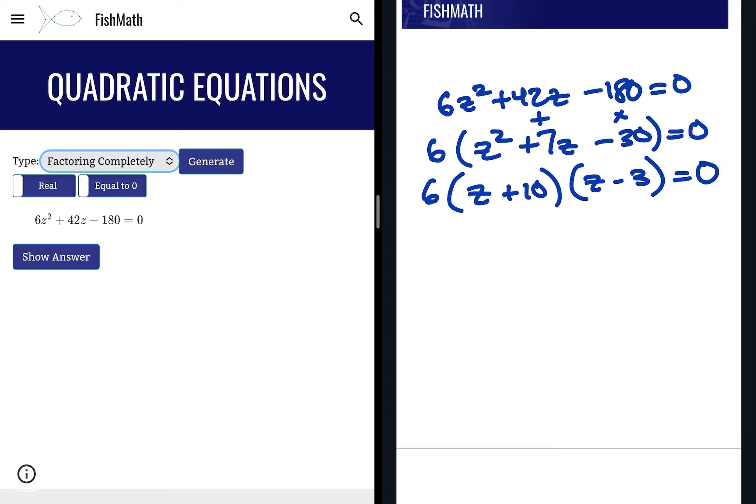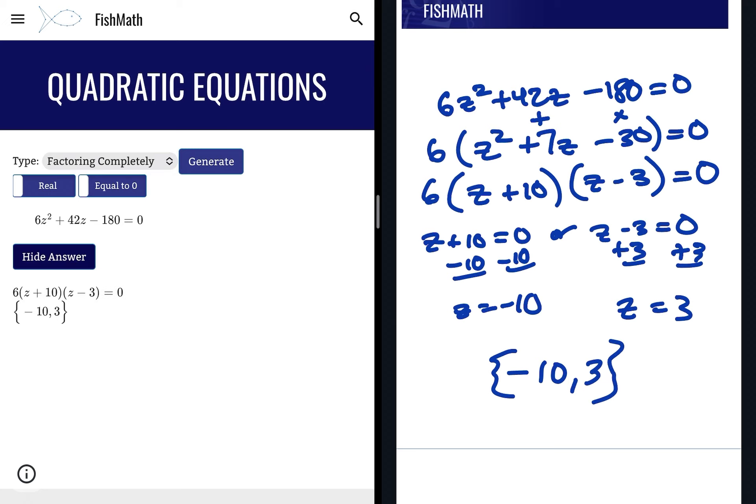Just like you normally factor trinomials, each of these can be equal to 0. 6 obviously can't be 0, but z + 10 can be 0 or z - 3 could be 0. Those are our two options. So we solve this one for z and we get -10 or we get 3. So our two options for this one are -10 and 3.